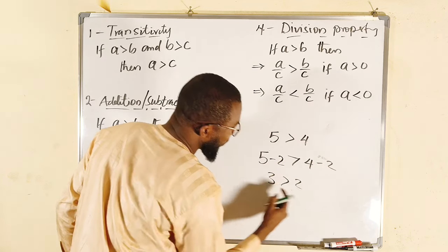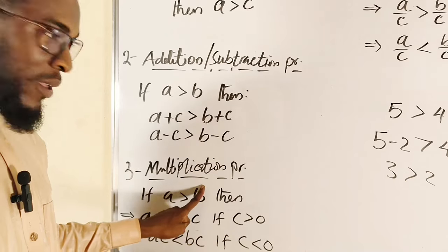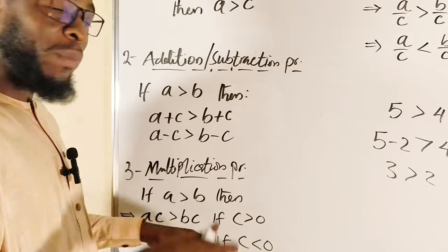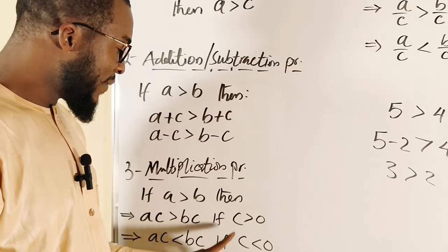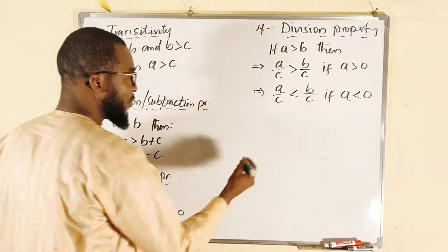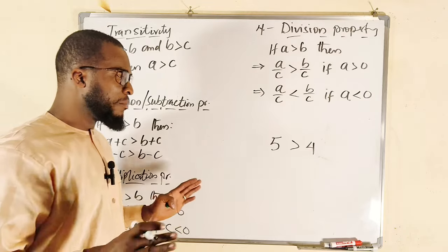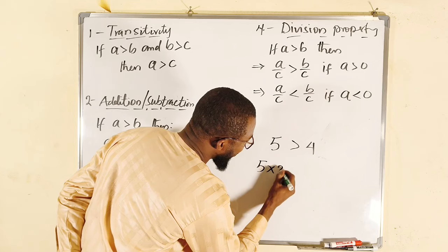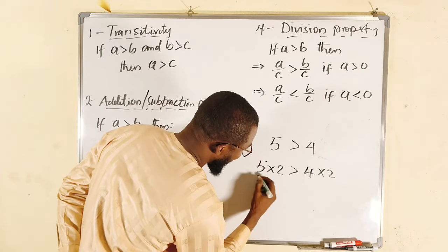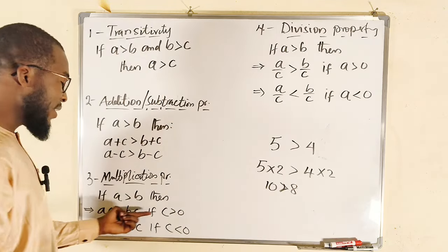The multiplication property: if a is greater than b, then a multiplied by a certain value will remain greater than b multiplied by the same value, provided that value is positive. For example, 5 is greater than 4. Multiplying both by 2: 5 times 2 is 10, and 4 times 2 is 8. Since 10 is greater than 8, the statement holds true when the multiplier is positive.